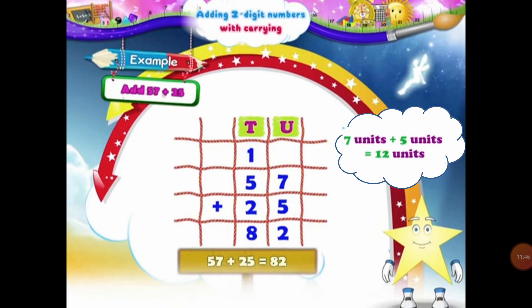Next example: in this example, we have to add 57 and 25. Let's place them under the 10s and units column. In 57, 5 will come under the 10s column and 7 will come under the units column. And in 25, 2 will come under the 10s column and 5 will come under the units column. Now students, let's start adding the digits of the units column. In the units column, we have 7 units and 5 units. When we add 7 units and 5 units, that will be equal to 12 units. Let's regroup 12 units into a group of 10s and units. In 12 units, we have 1 ten and 2 units.